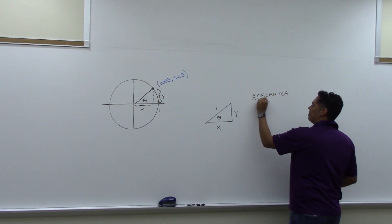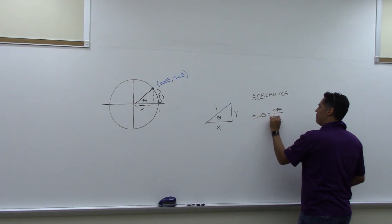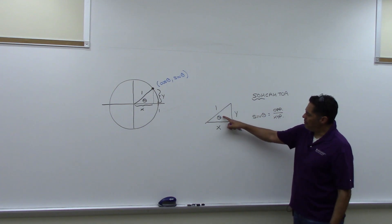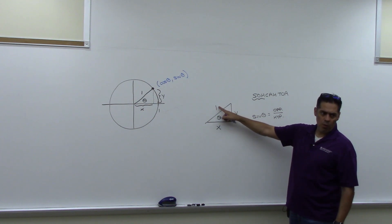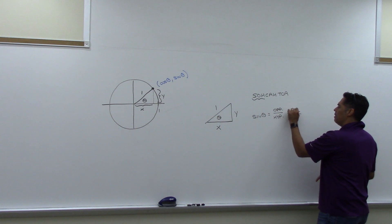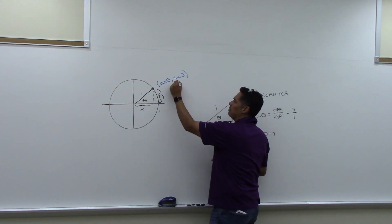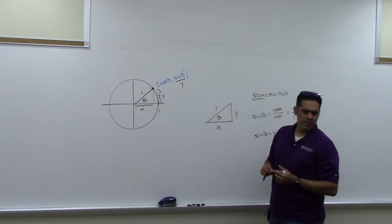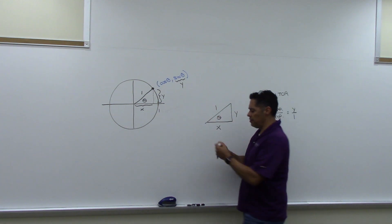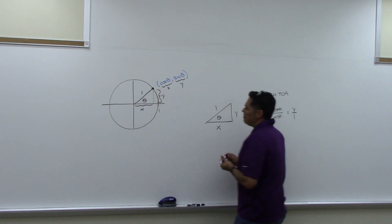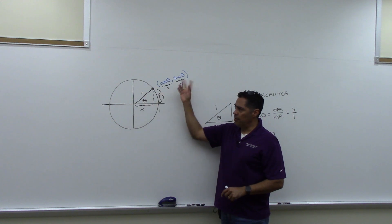Looking at sine: sine of angle theta is the opposite side divided by the hypotenuse. The opposite side of this angle is y, and the hypotenuse is 1. So y divided by 1 is y, meaning sine of theta equals y — that's why this y-coordinate is always sine theta. Similarly, cosine of theta is adjacent over hypotenuse, so cosine is always your x-coordinate. That's the connection between the x and y coordinates, the angle, and the trig functions.